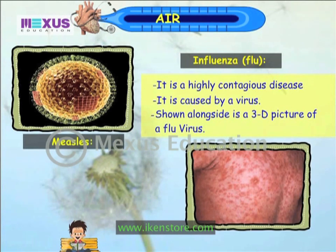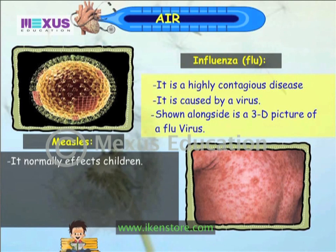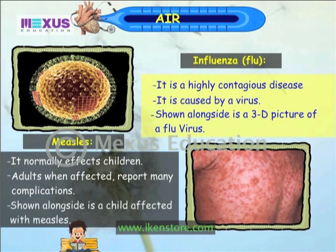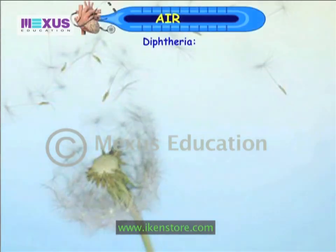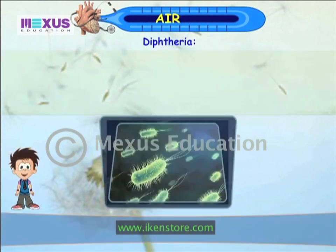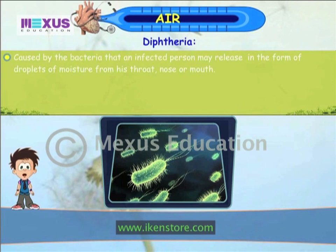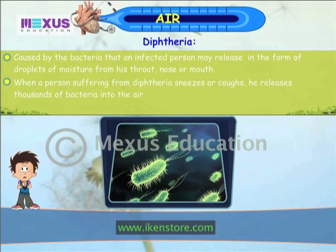Measles normally affects children. Adults, when affected, report many complications. Diphtheria is caused by bacteria that an infected person may release in the form of droplets of moisture from his throat, nose or mouth. When a person suffering from diphtheria sneezes or coughs, he releases thousands of bacteria into the air.